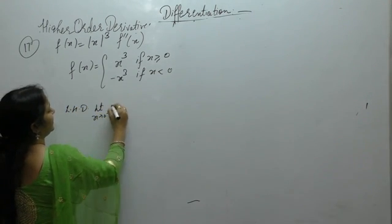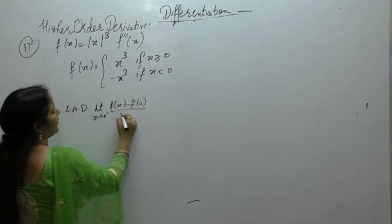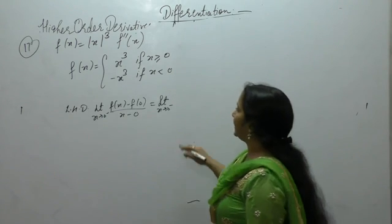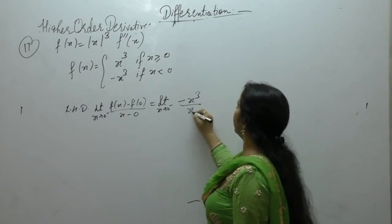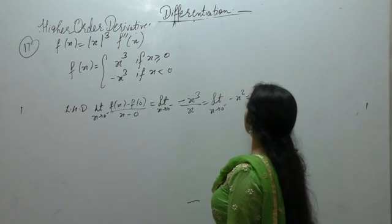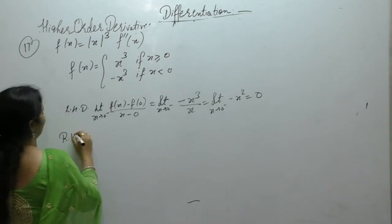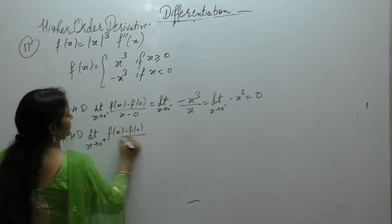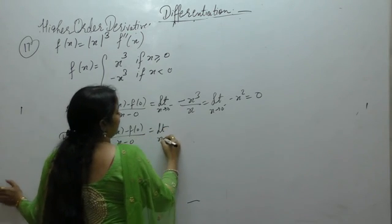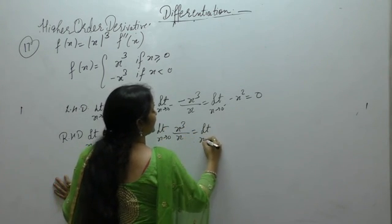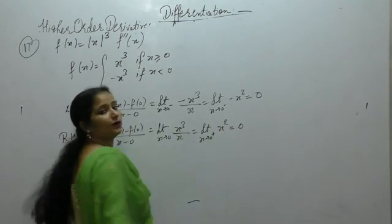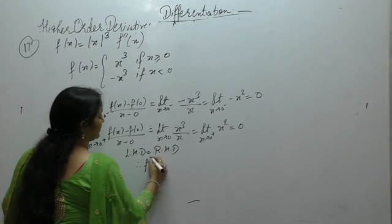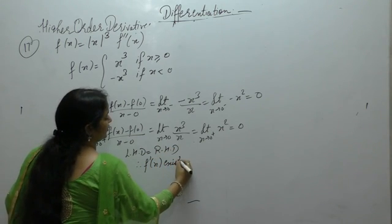For the first order derivative, the left hand derivative is limit x tends to 0 negative of [f(x) minus f(0)] upon (x minus 0). For the left hand derivative, the value is minus x³ upon x, giving minus x², which gives 0. For the right hand derivative, limit x tends to 0 positive, modulus of x is positive so we get x², that is also 0. Since left hand derivative equals right hand derivative, therefore first order derivative exists at x equals 0.